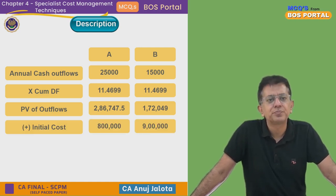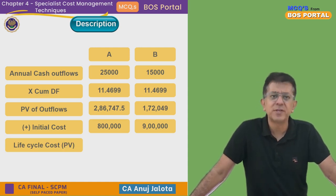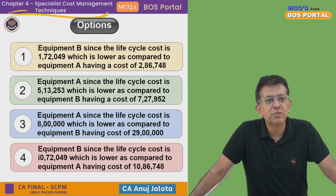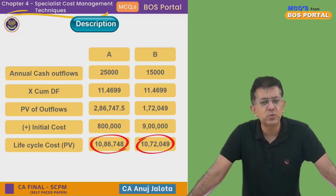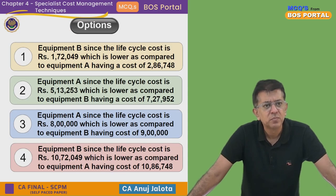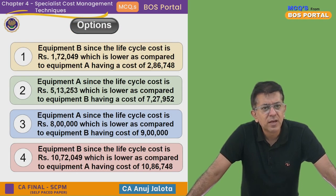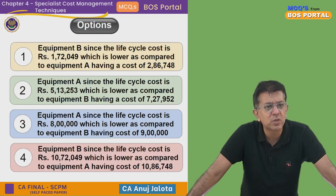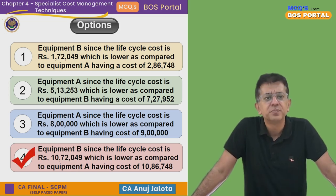Today you also buy Equipment A and B, so add those initial costs: eight lakh rupees and nine lakh rupees respectively. Adding these gives the total lifecycle cost for Equipment A and Equipment B in present value terms. That comes to 10,86,748 for Equipment A and 10,72,049 for Equipment B. Checking against the four options — Equipment B at 10,72,049 and Equipment A at 10,86,748 — the answer is option number four.